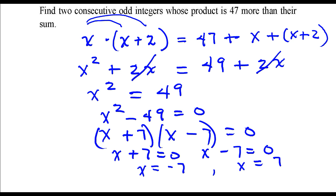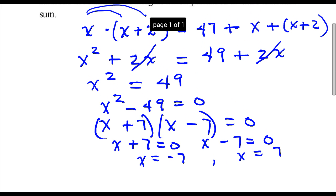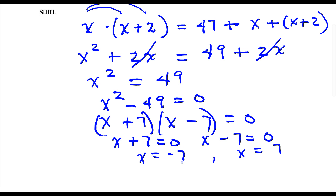So we're looking for two consecutive odd integers. Let's take this first answer, negative 7 first. If this is the first odd integer, then the next consecutive odd integer would be negative 5. And for this answer, if 7 is the first integer, then its consecutive integer would be 9.